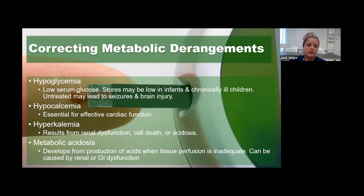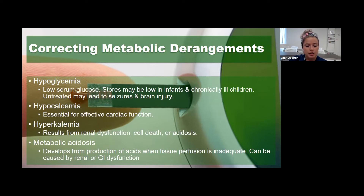When correcting metabolic derangements, hypoglycemia is a big one—kids use a lot of sugar, and if glucose is extremely low it can lead to seizures and brain injury. Hypocalcemia is essential for cardiac function. Hyperkalemia results from renal dysfunction. Acidosis will be present, and metabolic acidosis on your blood gas develops when tissue perfusion is inadequate—it can be caused by renal or GI dysfunction. Keep the history in mind; things mom has told you may give you clues.